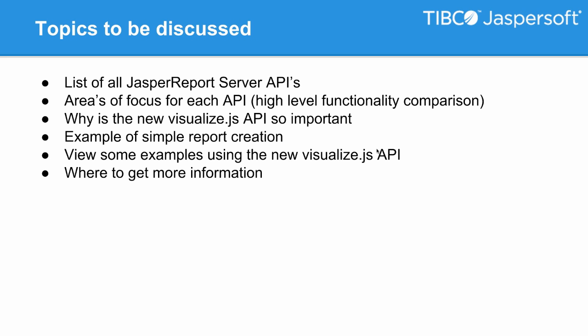Here you'll see a list of the different items that will be discussed in today's presentation. First, I'll give you a list of the different APIs available when using, embedding, and communicating with the Jasper Report server. I'll also give you a high-level functionality comparison of these various APIs. I'd like to cover why this new JavaScript API called Visualize.js is so important, show an example of how to create a JavaScript code snippet to embed a report, share screenshots of reports embedded within a webpage, and finally, show you where to get more information about Visualize.js.